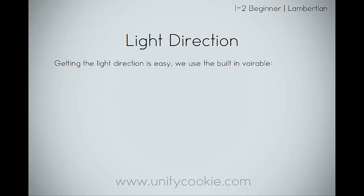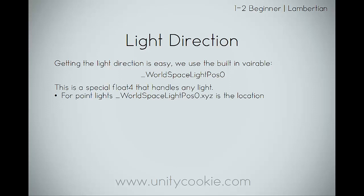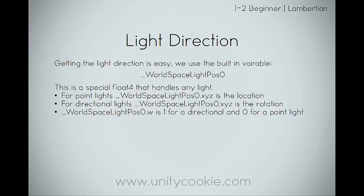Getting the light direction is easy. We'll use the built-in variable WorldSpaceLightPos0. This is a special float4 that handles any light. For point lights, WorldSpaceLightPos0.xyz — the first three components — is the location. For directional lights, it is the rotation. And w, the fourth component, is 1 for a directional light and 0 for a point light. We'll only work with directional lights for now. Later on we will incorporate point lights, and we'll possibly look into working with spotlights at a later stage, but likely not within this series.